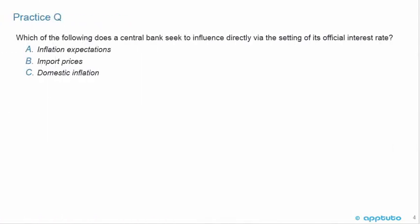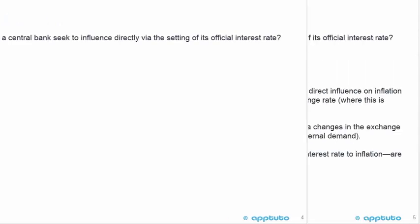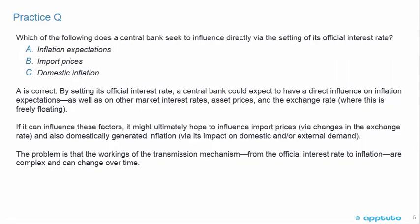Practice question: Which of the following does a central bank seek to influence directly via the setting of its official interest rate? A. Inflation expectations, B. Import prices, or C. Domestic inflation? The correct answer is A. By setting its official interest rate, a central bank could expect to have a direct influence on inflation expectations. The word 'expectations' is very important here.